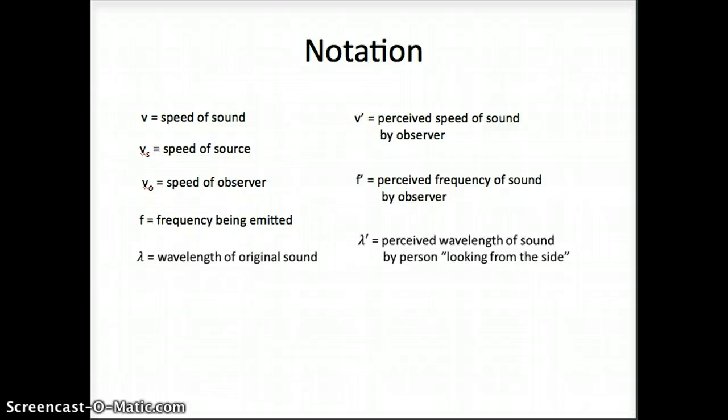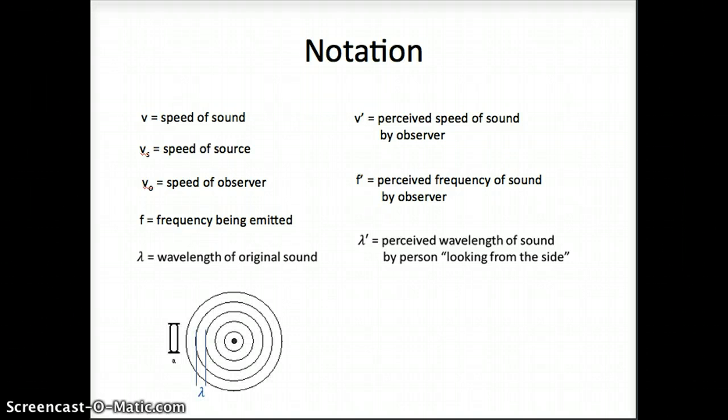To illustrate this, here, this dot in the center is our source that is emitting sound. Each of these circles represents a crest of the wave, of the sound wave. The distance between these two crests is the wavelength. So here, the source is sitting still, and the distance between crests is the wavelength. Over here, this is supposed to represent a listener.